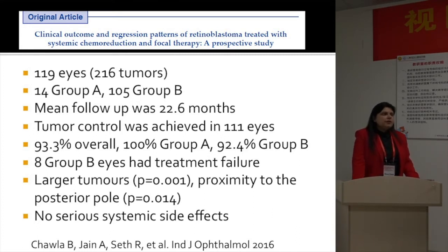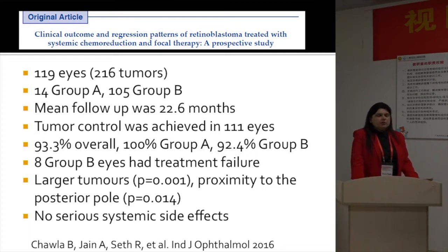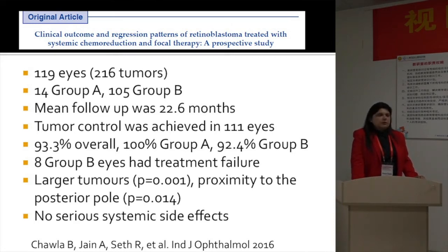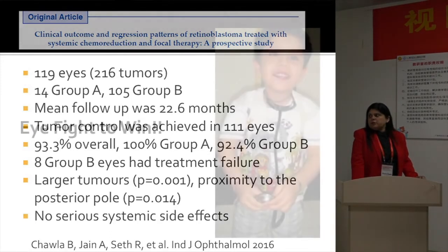We did not use any intra-arterial, intravitreal, or periocular chemotherapy — it was just systemic chemotherapy and focal therapy. We found that larger tumors and those with proximity to the posterior pole were more likely to fail in Group B eyes, and there were no serious side effects of this treatment.